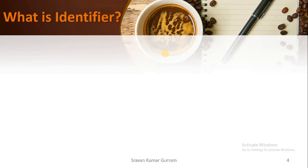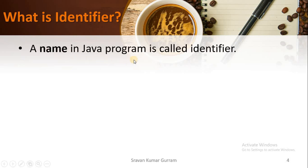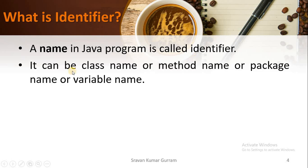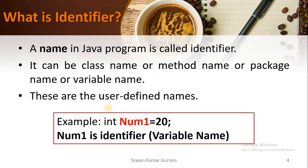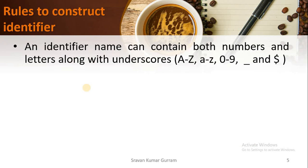Before starting the variable concept, let us try to understand the identifier concept. A name in a Java program is called an identifier. That name can be a class name, method name, package name, or variable name. An identifier is a user-defined name. You can give any name by following some rules. For example: int number1 = 20; here number1 is a variable name, that is an identifier.